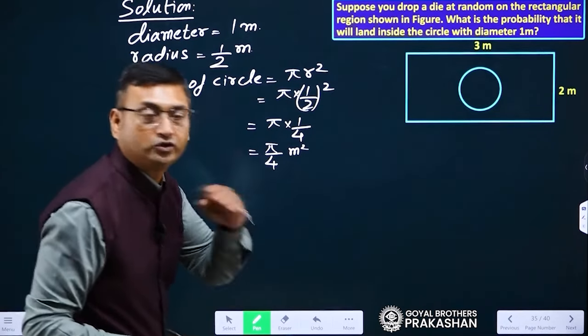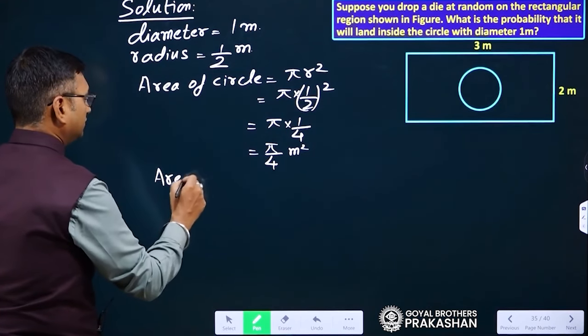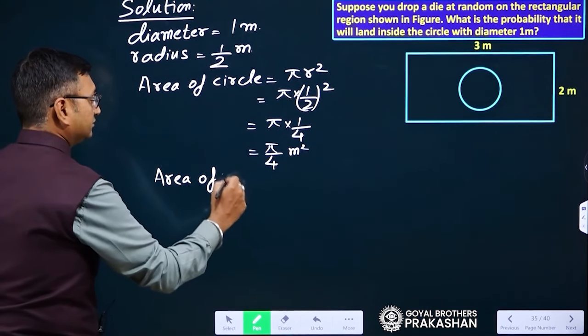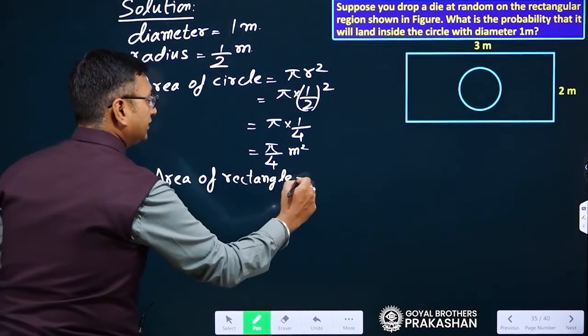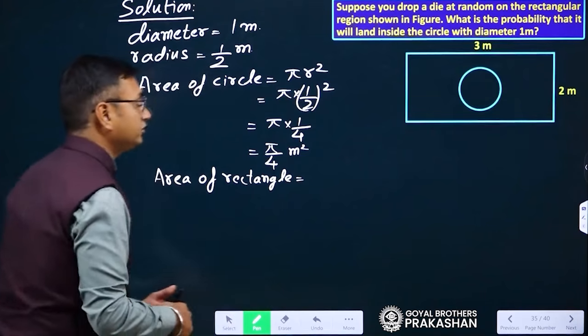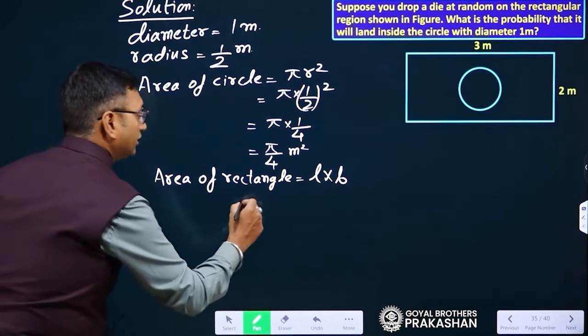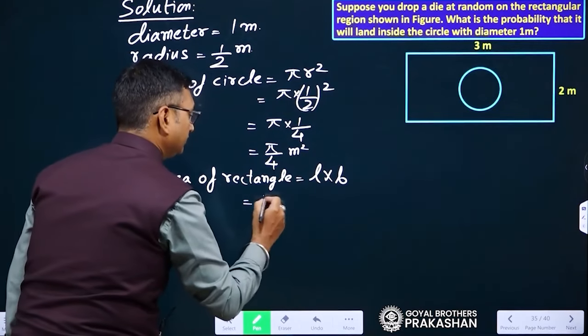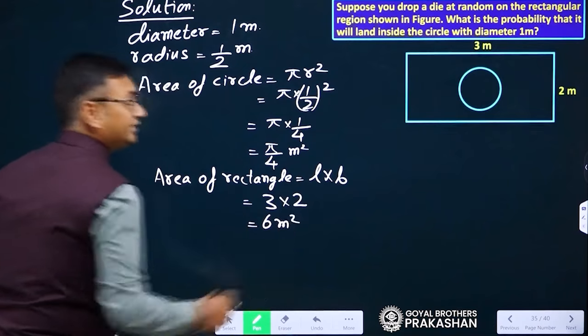Now we have to find out area of rectangle. What is the area of rectangle? That is length multiplied with breadth, length into breadth. Length is 3 meter and breadth is 2 meter. This comes to be 6 meter square.